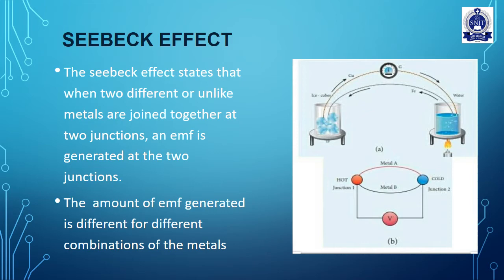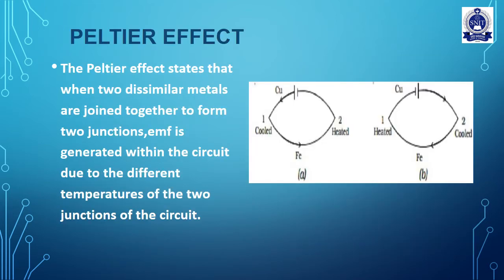The Peltier effect states that when two dissimilar metals are joined together to form two junctions, an EMF is generated within the circuit due to the different temperatures of the two junctions. When dissimilar metals are joined, EMF is induced due to the temperature difference of the two junctions.